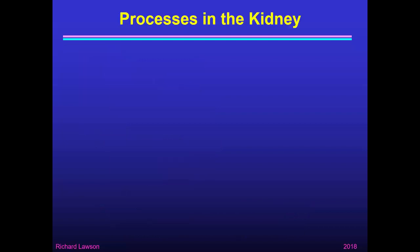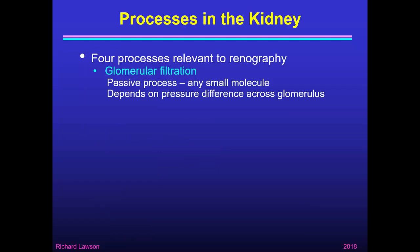Let's remind ourselves of the processes that take part in the kidney. There are four processes that are relevant to renography. The first is glomerular filtration. This is a passive process — any molecule that is small enough to pass through the glomerular membrane will be filtered regardless of its chemical nature; it just depends on the size. The rate depends on the pressure difference across the glomerulus, so it's a hydrostatic pressure driving it through.